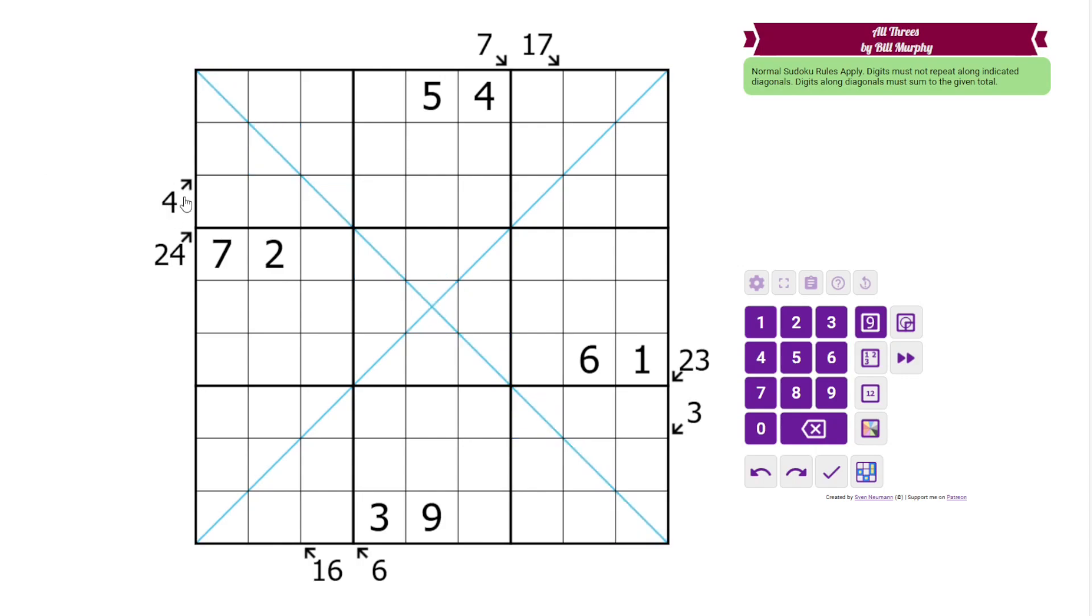And then we have clues outside the grid that give us the sum of digits in cells along those arrows. In this puzzle, all of the arrows are pointing within boxes, so we don't have to worry about repeats in this case. In general, in little killer we do. But those are the rules, and we will start with our little killer clues.